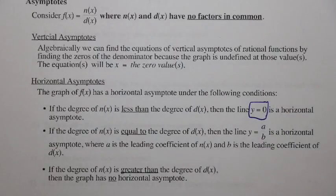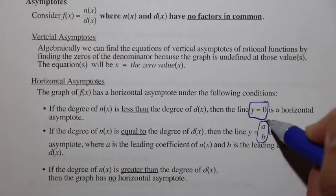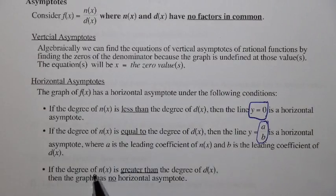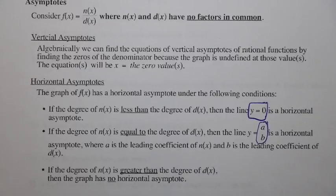For horizontal asymptotes, we compare the degree. If the degree of the numerator n(x) is less than the denominator, then y equals zero is the horizontal asymptote. If the degrees are equal, we look at the leading coefficients — the leading coefficient of the top over the leading coefficient of the bottom. If the degree of n(x) is greater than d(x), there's no horizontal asymptote.